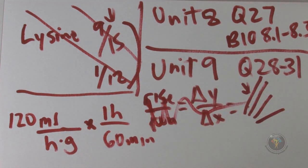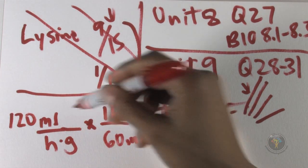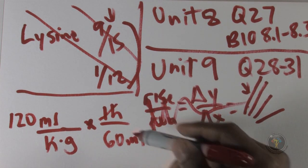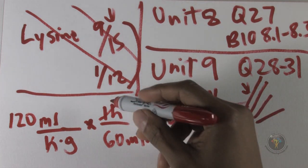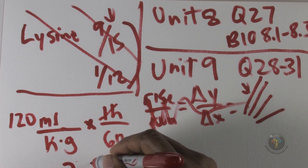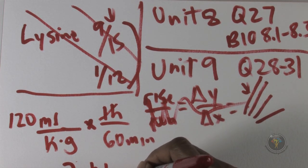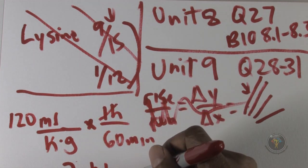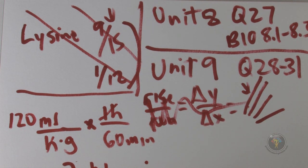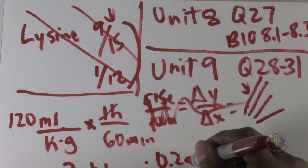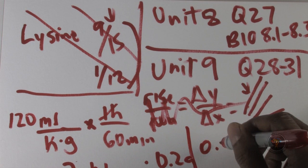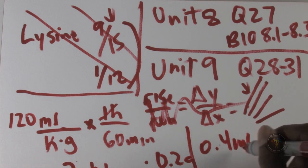And I get 120 over 60, which is obviously two. And that's two mils per minute per gram. And then I can multiply this by 0.2 grams, and I have 0.4 mils per minute.